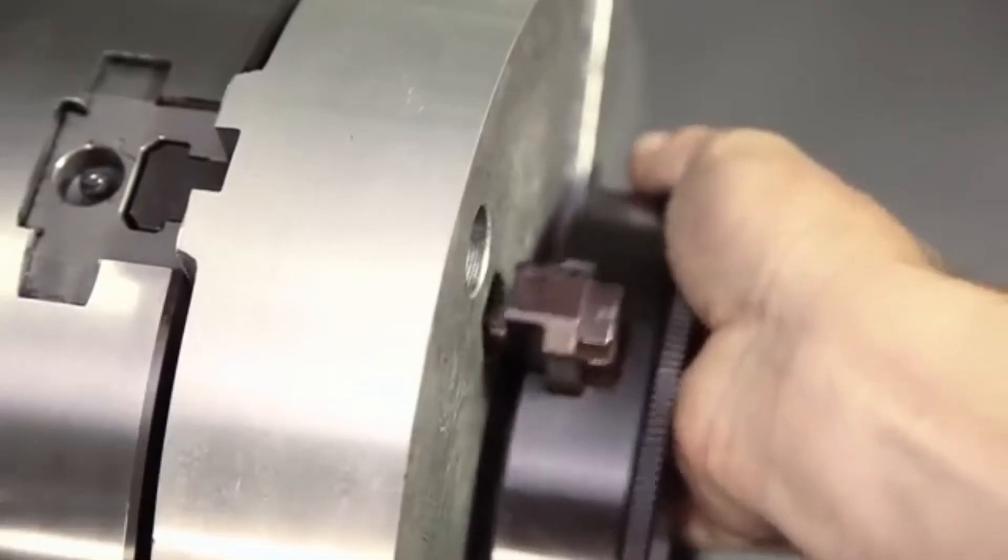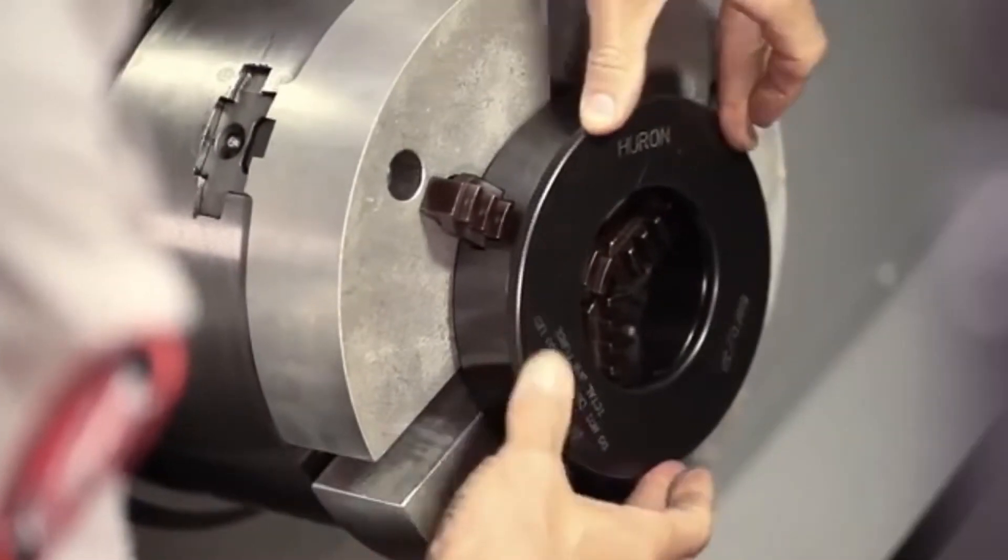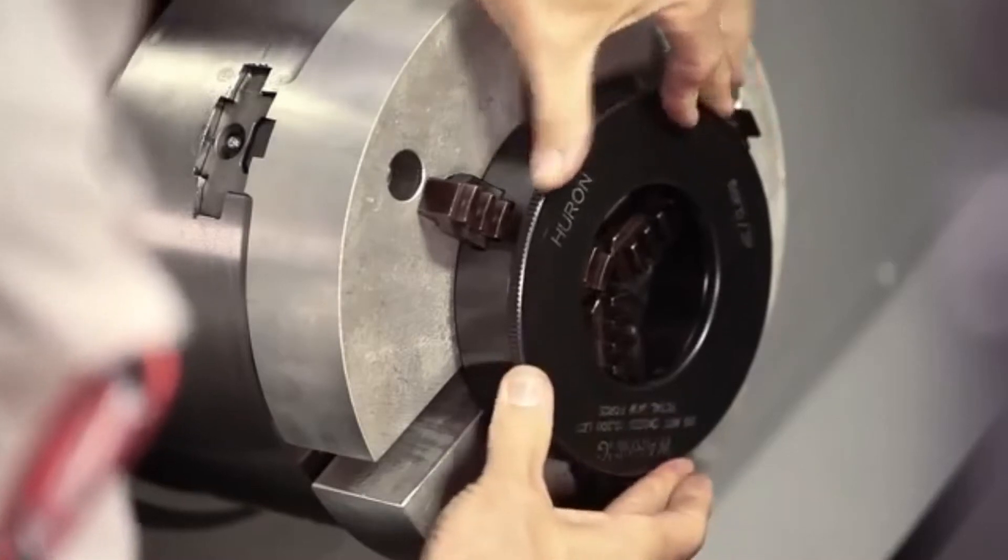Now place the prongs into the counter bore of the aluminum full grip jaws, adjust to the desired size, and then clamp down so we can machine.